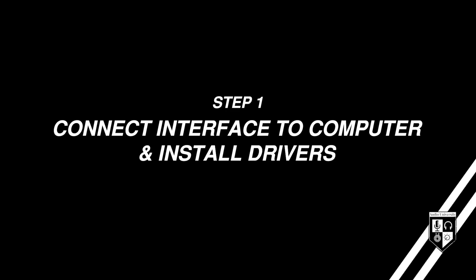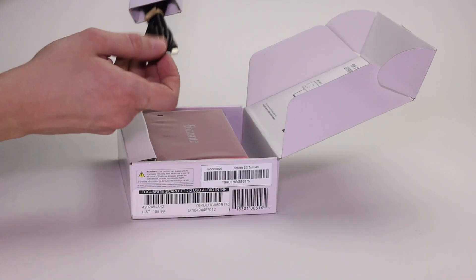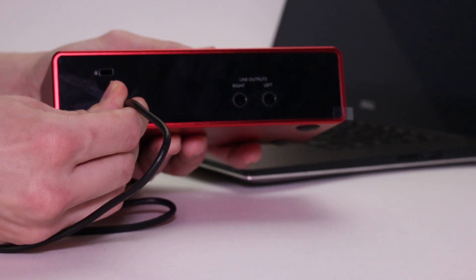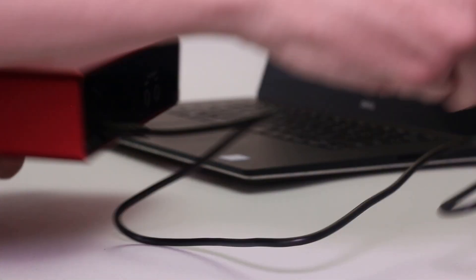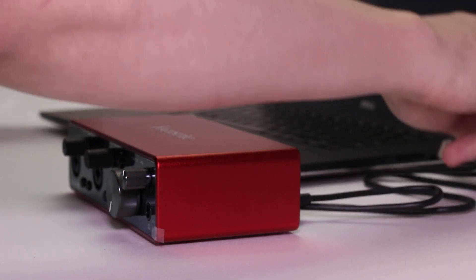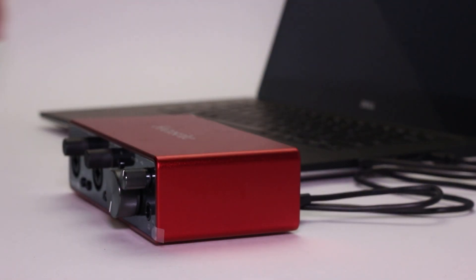When you open the Focusrite Scarlett 2i2, you find the interface itself and the USB cable for connecting it to your computer. The first step is to connect the interface to your computer using the included cable. You may need to download the most up-to-date driver for your interface, which you can find easily with a quick search.